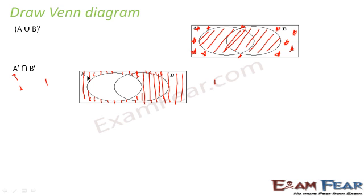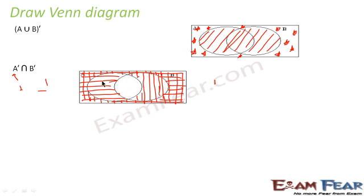Now let me write B complement in the vertical line. So this is B complement — B is the circle, and outside of it is B complement. Now intersection means common area: what is common to both A complement and B complement is in the gauge form. We can see this is the same as the star form region, which proves these two are equal.